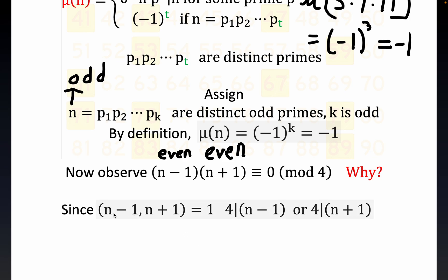Also notice that the greatest common divisor of n minus 1 and n plus 1 is 2. Think 14 and 16, or 18 and 20—consecutive even numbers. The GCD of consecutive even numbers is 2. It's a fairly straightforward proof you can prove by contradiction.